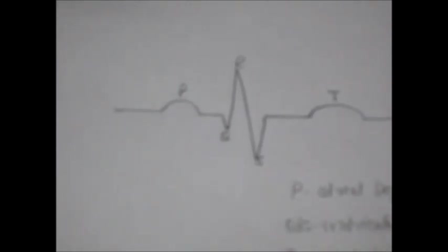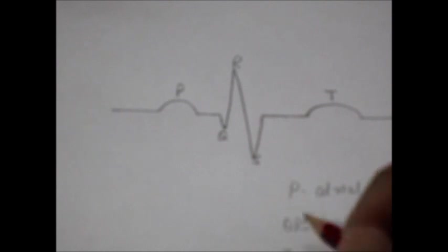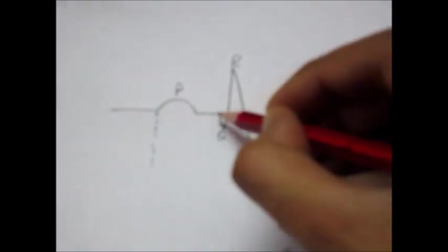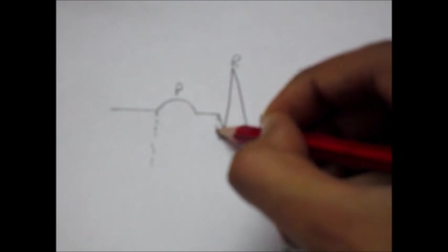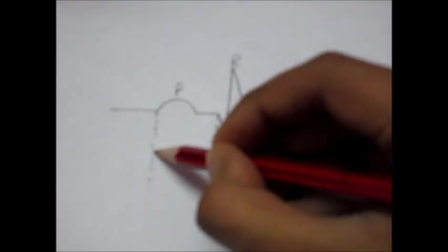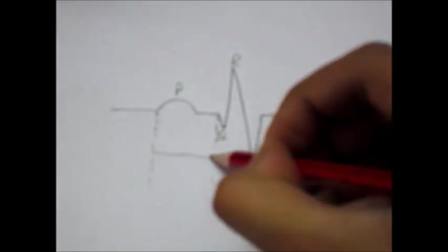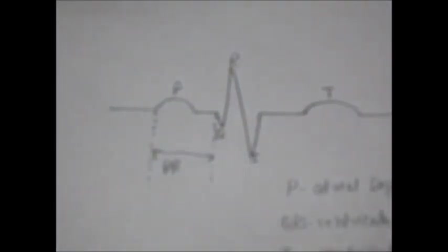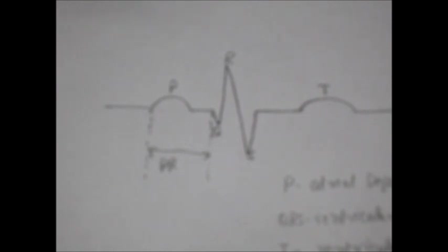Now let's see what are the intervals found in the ECG. First of all, we have a PR interval which is from the beginning of P wave till the beginning of Q wave, and if Q is absent then the R wave. That's why PR interval or PQ interval.